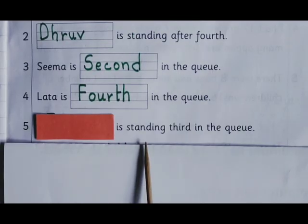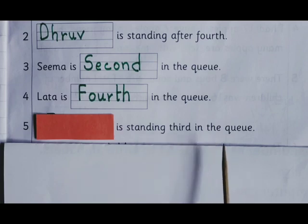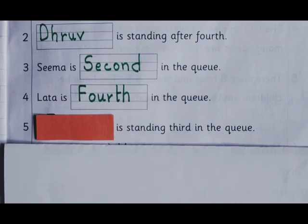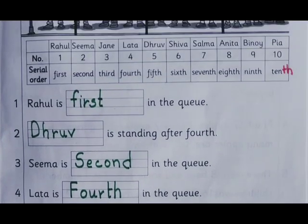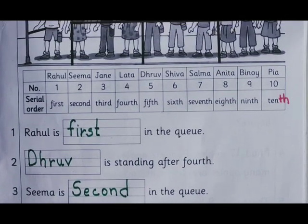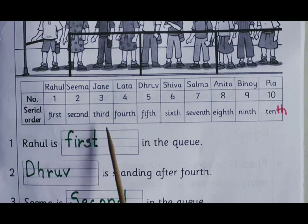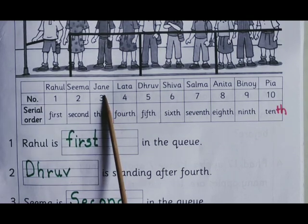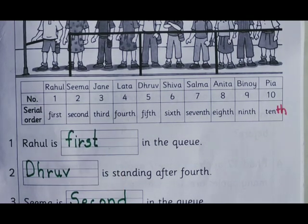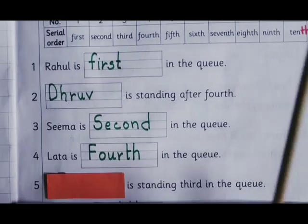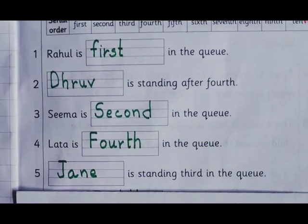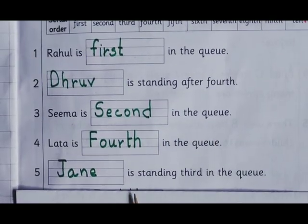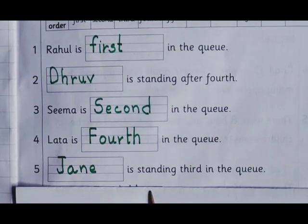Dash is standing third in the queue. 3rd — Jani. Jani is standing third in the queue.